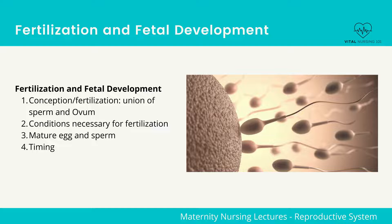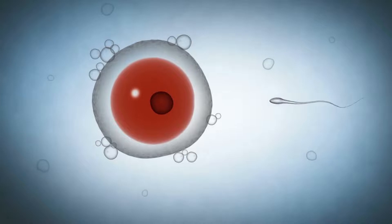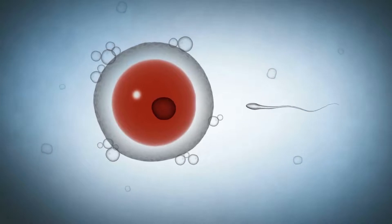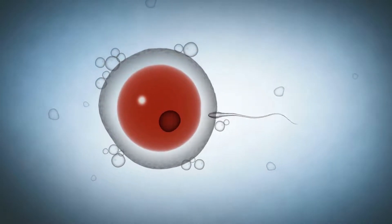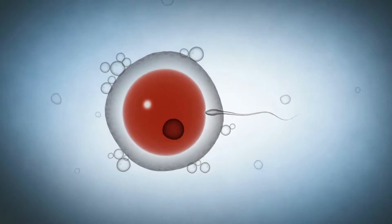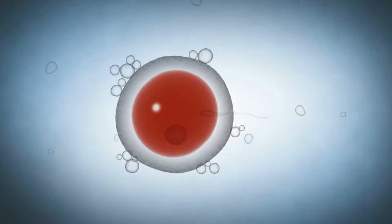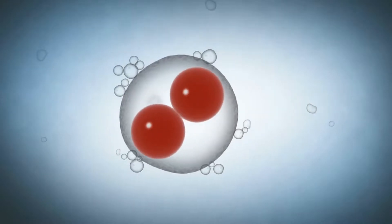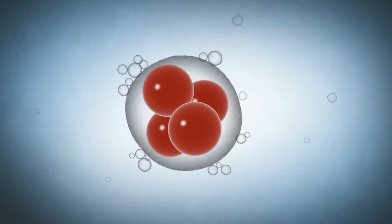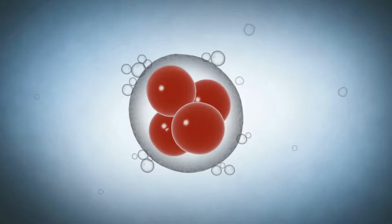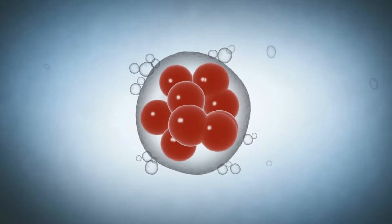These conditions include the following: mature egg and sperm, and timing. Vaginal and cervical secretions are another consideration. In order for the sperm to survive, vaginal secretions need to be less acidic during ovulation. During the ovulation phase, vaginal secretions are thinner, which allows the sperm to penetrate much more easily.